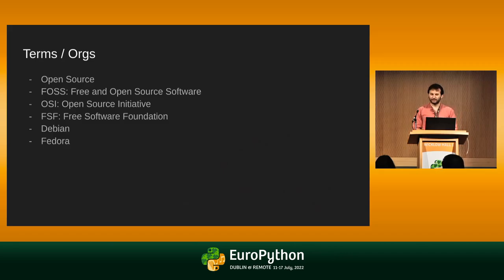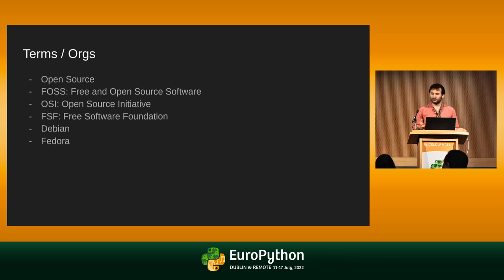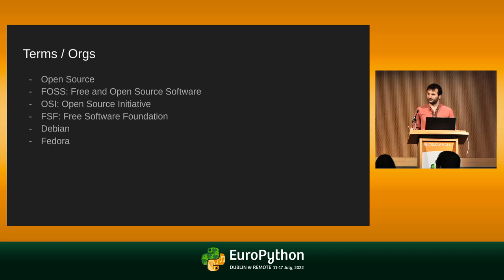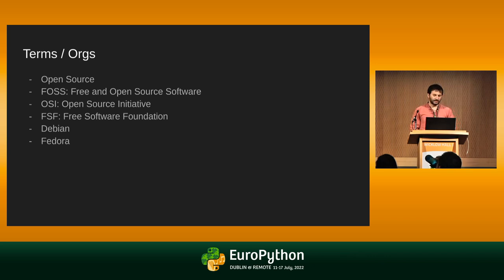Before we start, let's talk about a few different terms. Open source is one thing, but free and open source software is another thing. Free there means freedom, not free as in free beer. What freedom is differs for different people, and that's why you have different organizations like the Open Source Initiative or the Free Software Foundation that don't necessarily agree with one another on whether a license gives you enough freedom. And then you have different distributions that take a bunch of software and redistribute it to people, with their own definition of what's accepted.